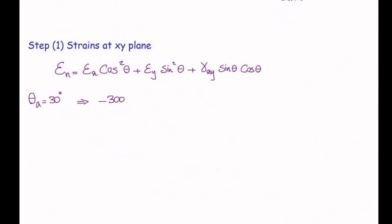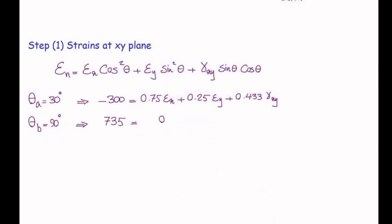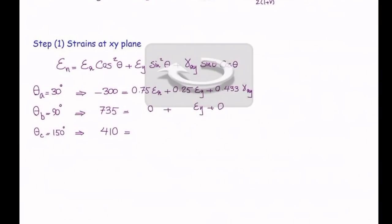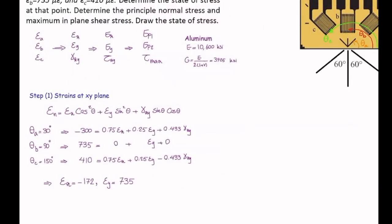For gauge a, θ = 30° and the reading is −300 microepsilon, plugged into the equation. For gauge b, θ = 90°: cos 90° = 0 and sin 90° = 1, so the equation simplifies to 735 = εy. For gauge c, θ = 150° giving 410 with the corresponding terms. We now have 3 equations and 3 unknowns. Solving them gives: εx = −172 microepsilon, εy = 735 microepsilon, and γxy = −820 microepsilon. These are the strains at that point.